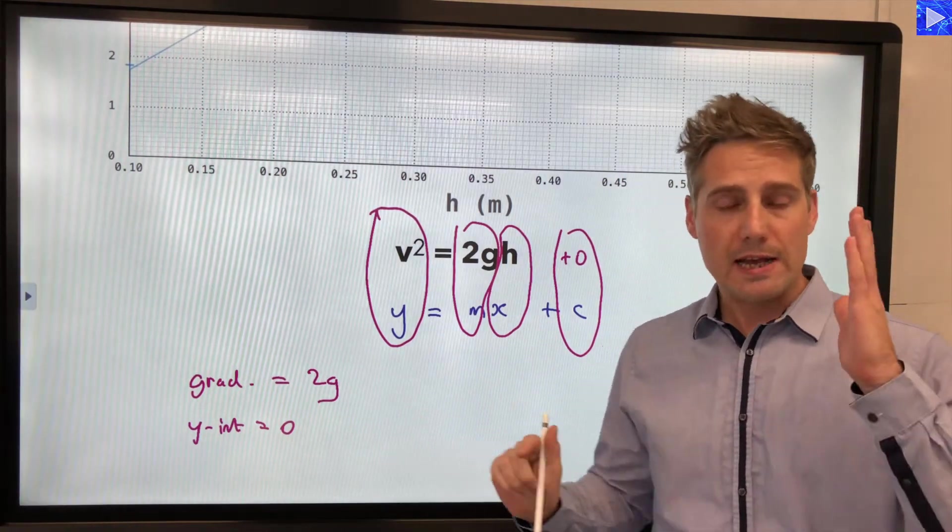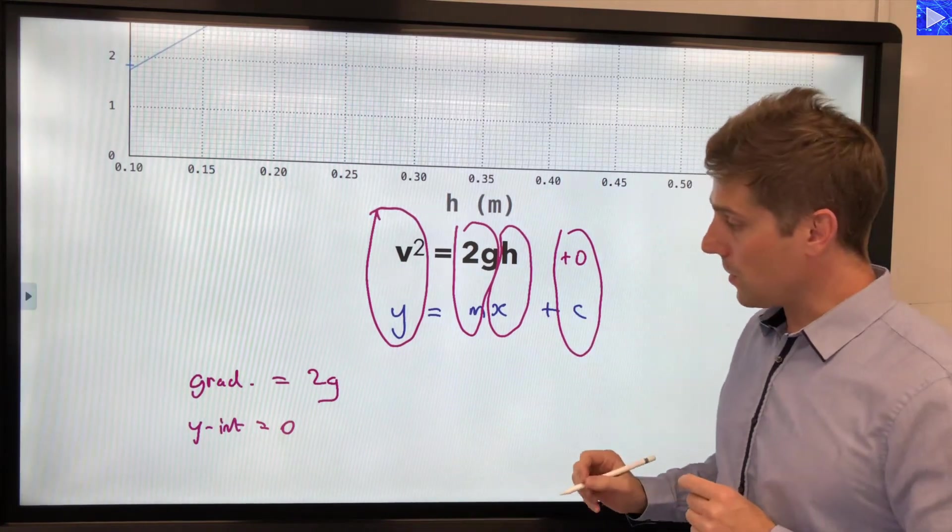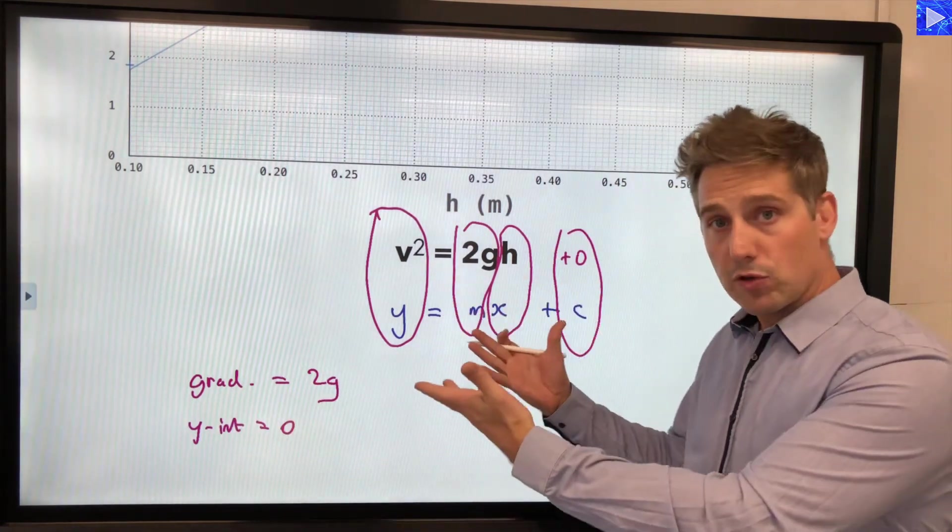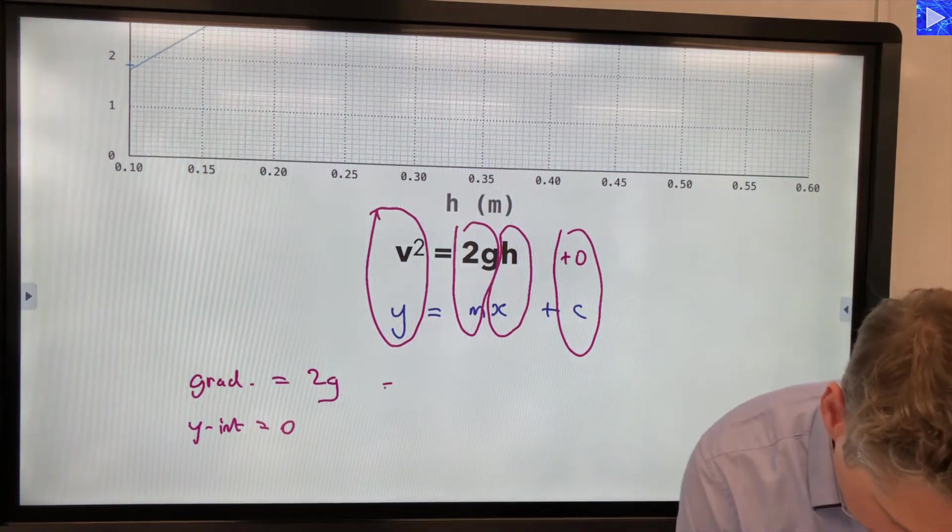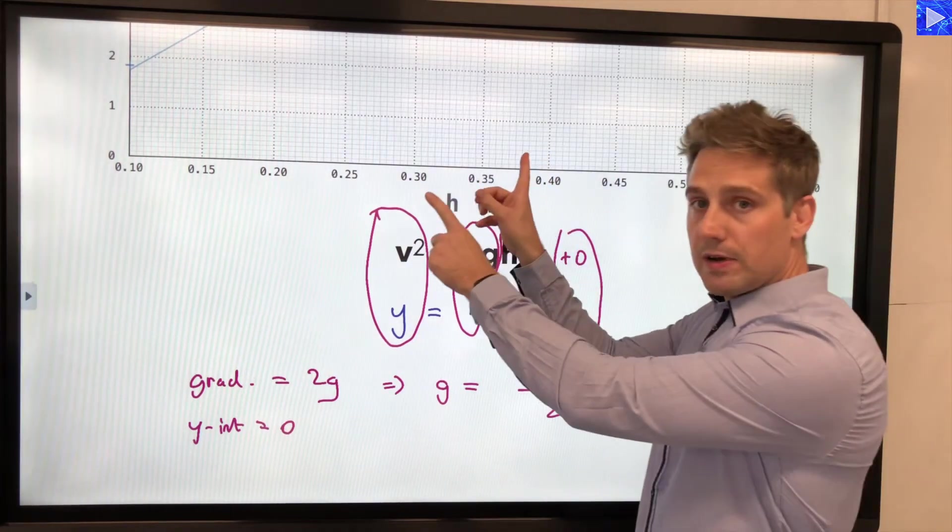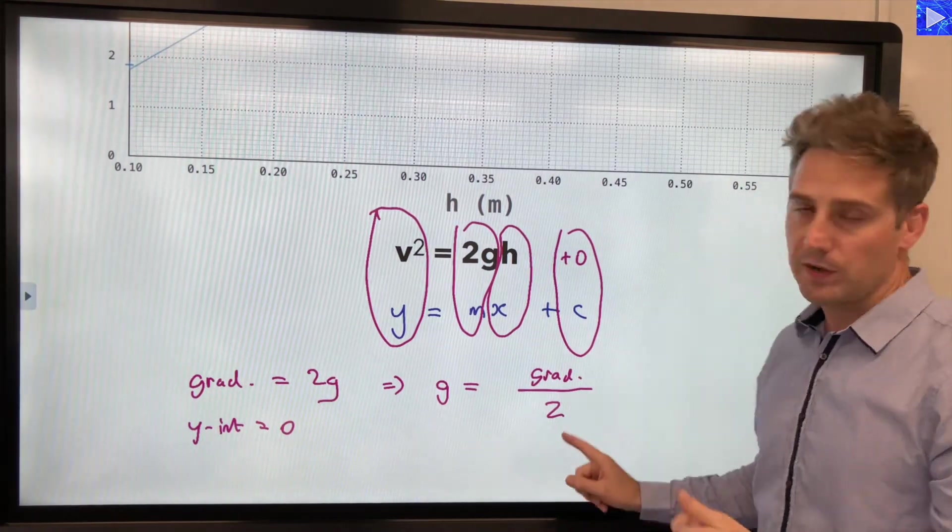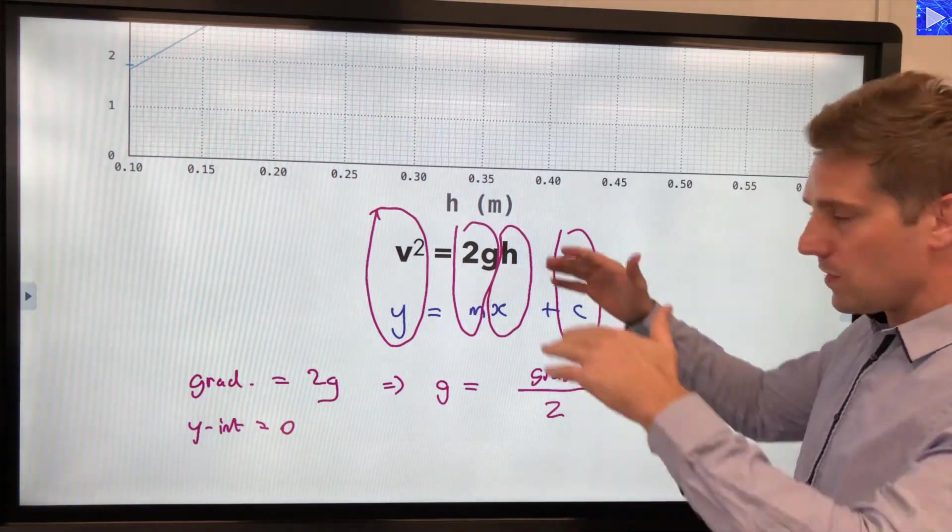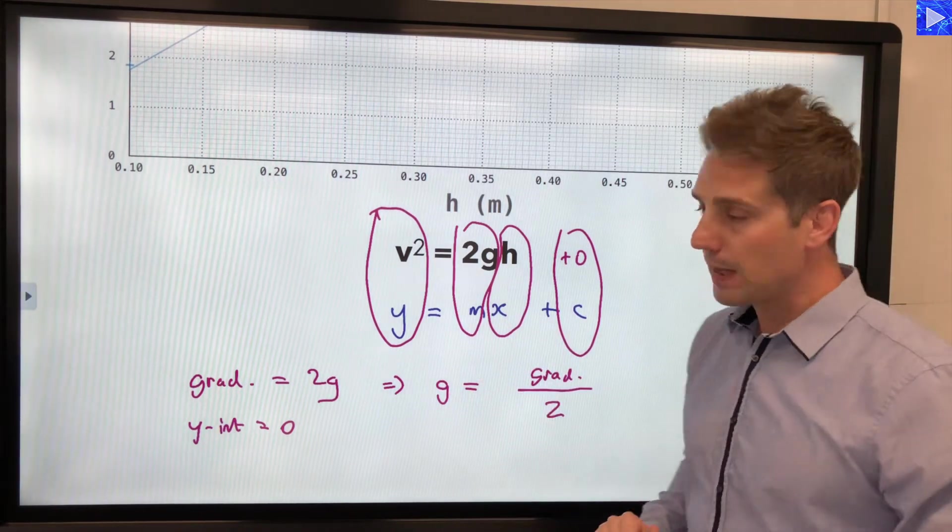With this if you remember I said that this was an experiment where we wanted to determine the value of g. So in order to do that we need to rearrange this equation. We've now related the gradient to 2g. So you work out the gradient of your graph and then we're going to need to rearrange this so that g is the subject. G will equal the gradient divided by 2. So you work out the value of your gradient, substitute it in here and it will be equal to the gradient divided by 2. That will give you the value of g. Hopefully that makes the general concept a little clearer having seen a real equation and what we need to do with that. Let's look at another example.